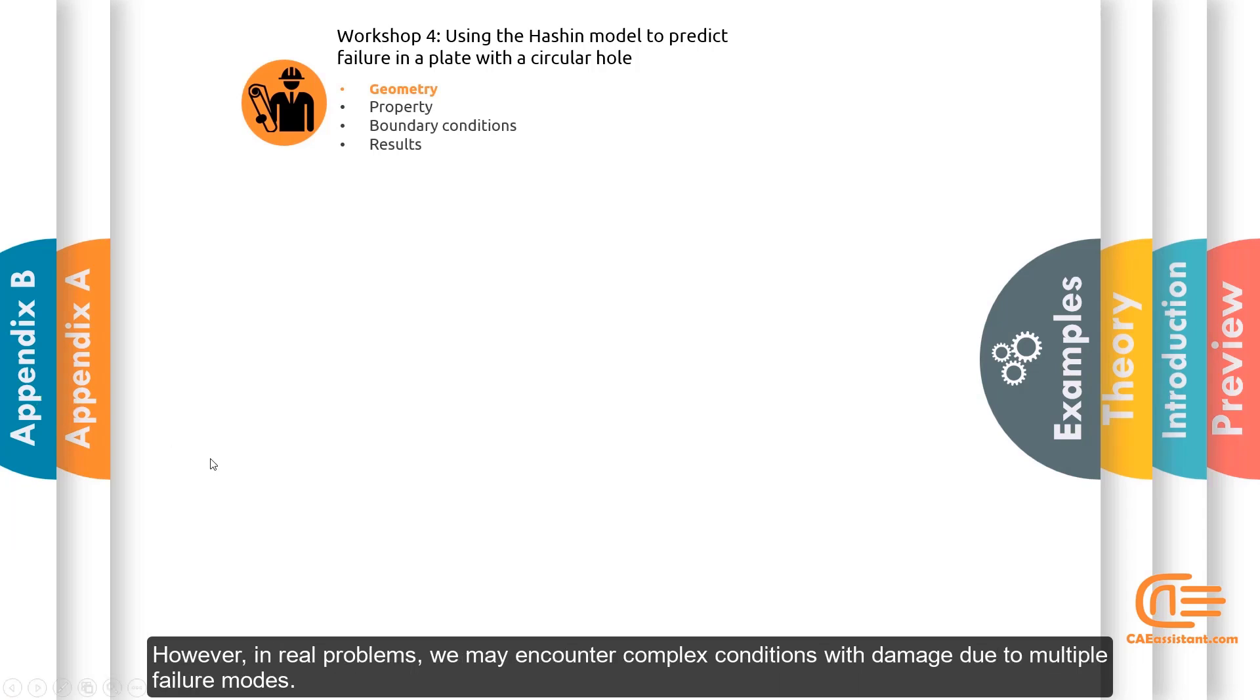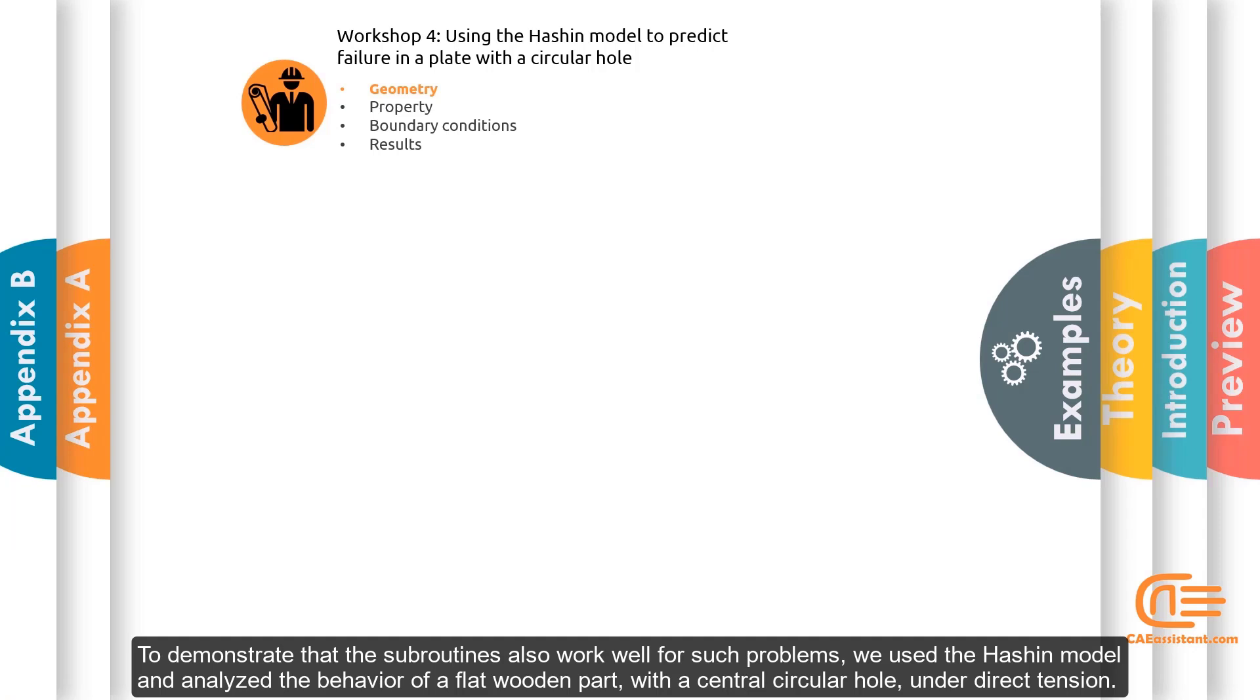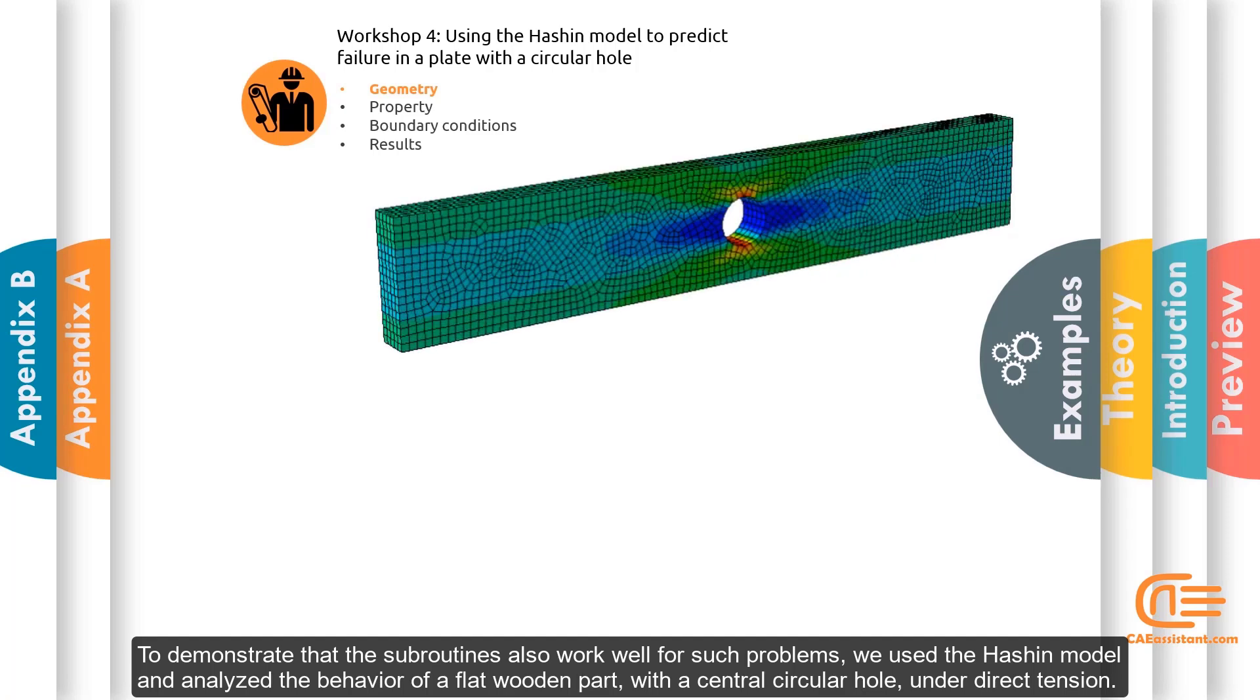However, in real problems, we may encounter complex conditions with damage due to multiple failure modes. To demonstrate that the subroutines also work well for such problems, we use the Hashin model and analyze the behavior of a flat wooden part with a central circular hole under direct tension.